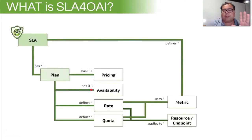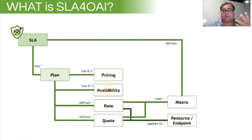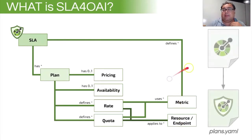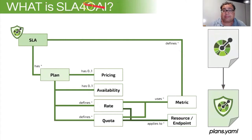SLA for API is a very simple model where we have an SLA as a set of plans, and each plan has pricing, availability, and then a list of rates and quotas. Every rate or quota is specified in terms of a metric and is associated to a resource endpoint, like a path in the OpenAPI spec. The idea is that you have the OpenAPI spec and then you link another document that shows the different plans in the SLA for API format.